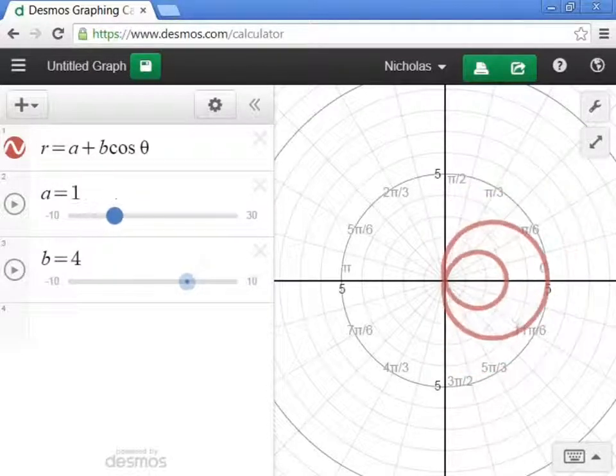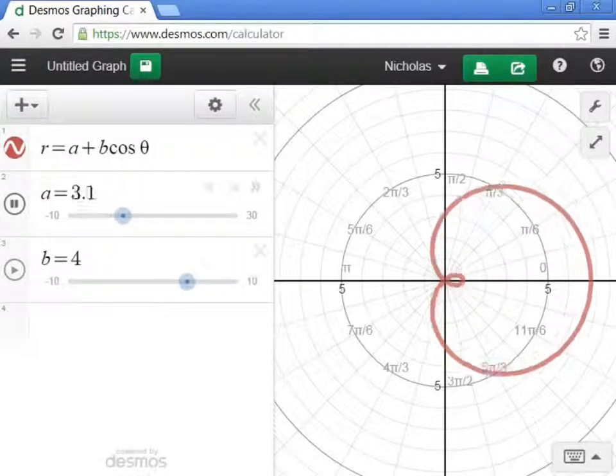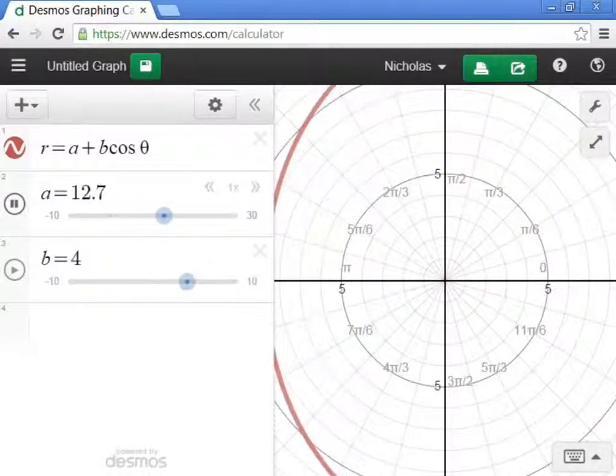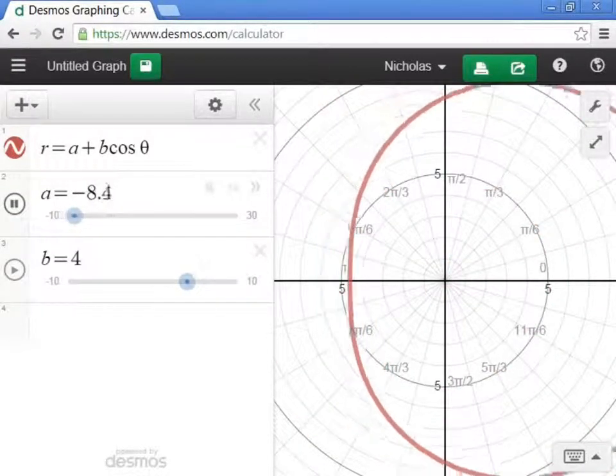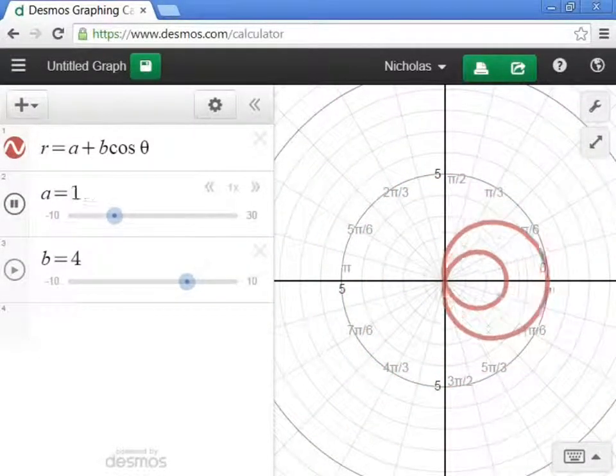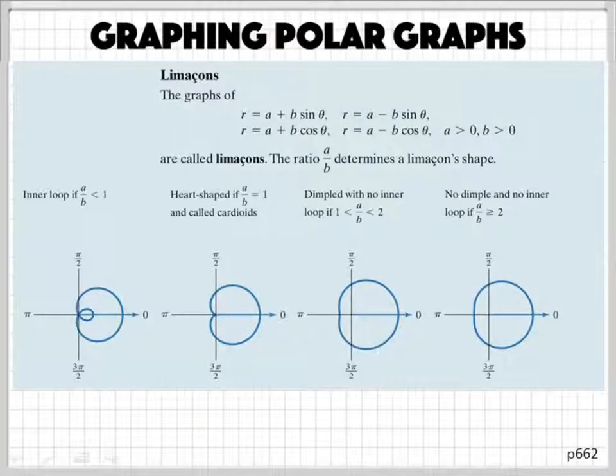Oh, that's neat. It just inverts it when you go negative. Sorry, I'm having too much fun playing right here. But yeah, you can hit play and, yeah, this gets really neat. Okay. Sorry. So anyways, that's the limicon.